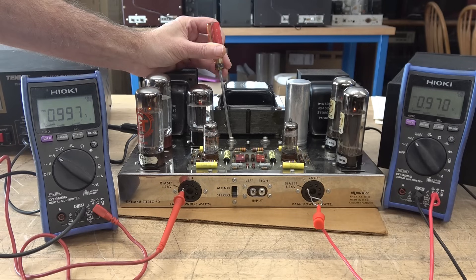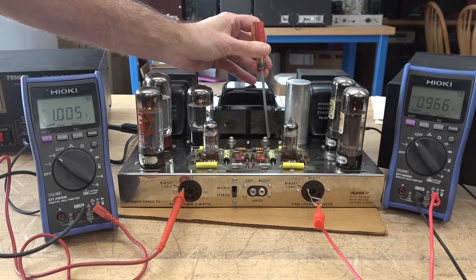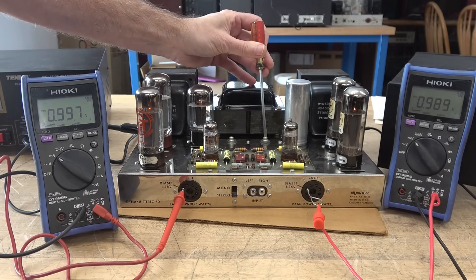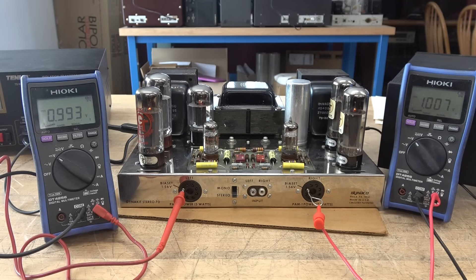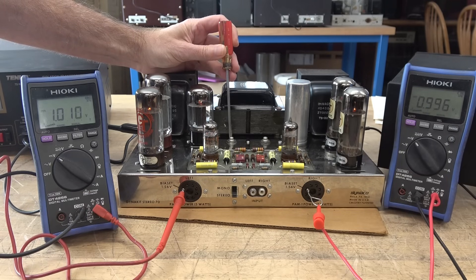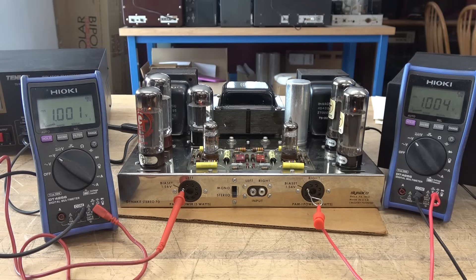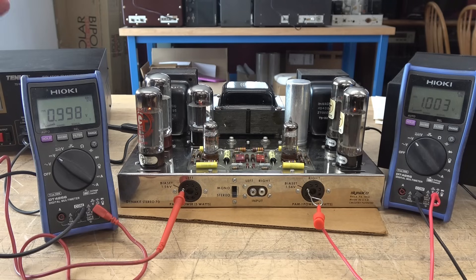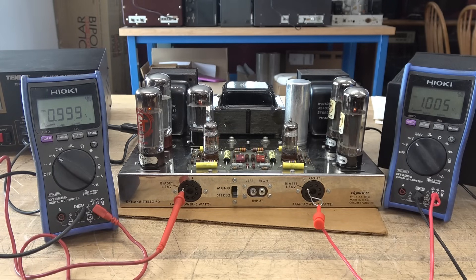All right. So there is about a volt on each side. And they're going to drift around as things heat up. But what you don't want to see is the current take off. And they are holding steady. Now I do not have a signal applied. I do not have speakers connected. So we still don't know if the amp works. But we do know that the output tubes will come up, bias up, and hold steady. So let's go ahead and hook up a signal source and some speakers.